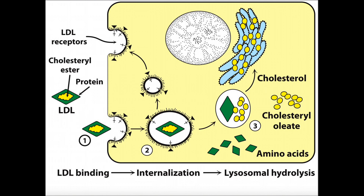If the cell has plenty of cholesterol and doesn't need any more, then these receptors won't be very concentrated in the membrane. But these receptors are a way of signaling to LDL that's floating by: 'I need some cholesterol.' So when the cell is low on cholesterol, LDL receptors are deposited into the membrane of that cell. These LDL particles like to stick on to these LDL receptors — they're receptors for LDL.